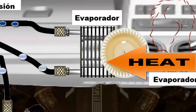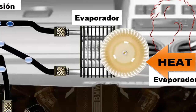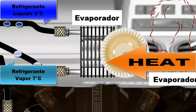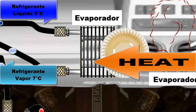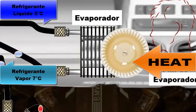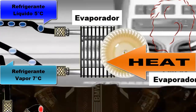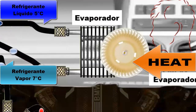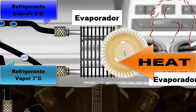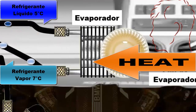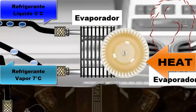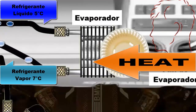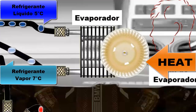Heat from the occupants enters the evaporator, causing the refrigerant to evaporate at this stage. For this reason, the refrigerant enters in liquid state at a temperature of 5 degrees Celsius, and exits the evaporator in a gaseous state with a slight temperature increase — in this case to 7 degrees Celsius. This temperature variation is known as the refrigerant superheat.